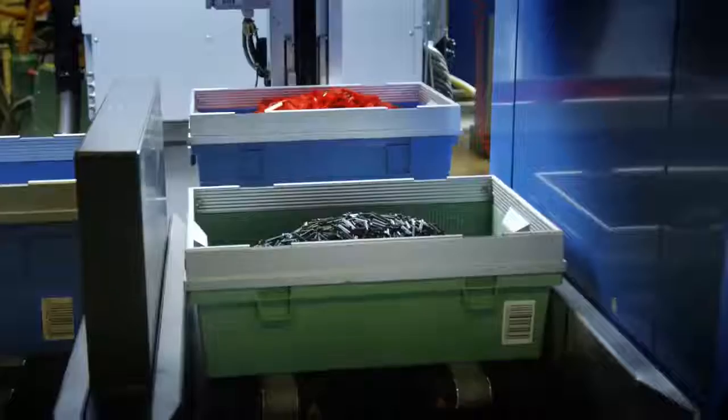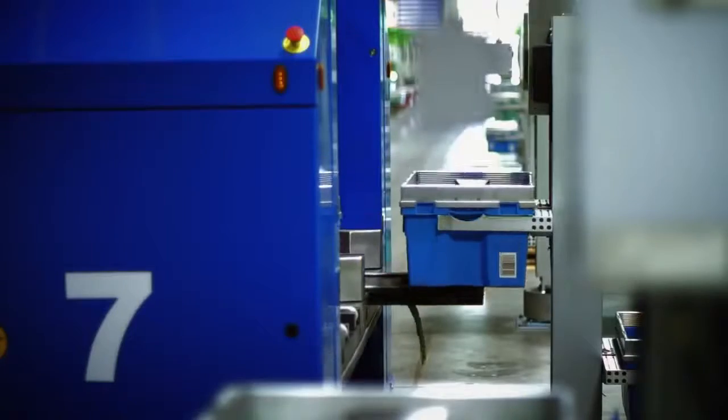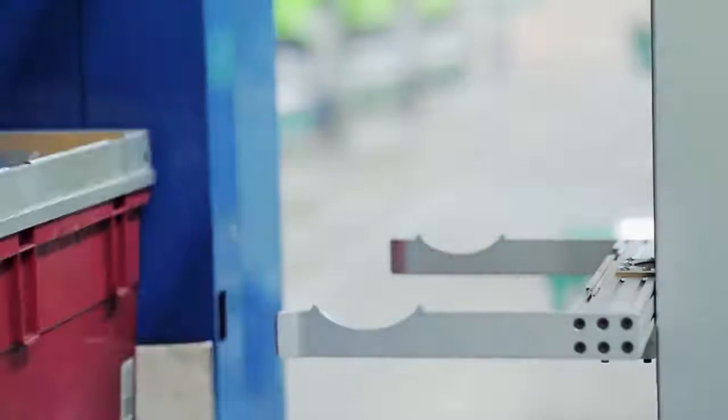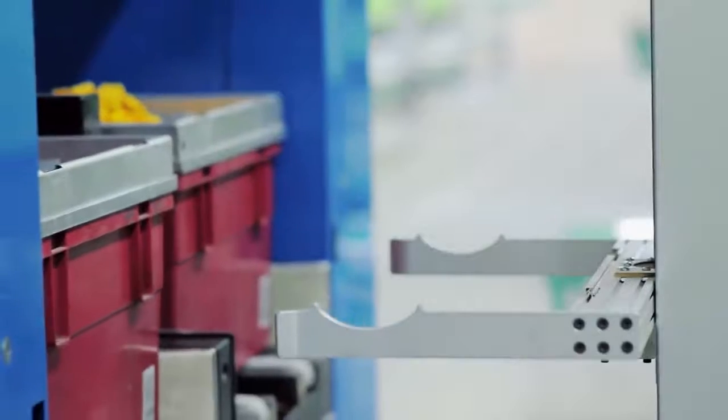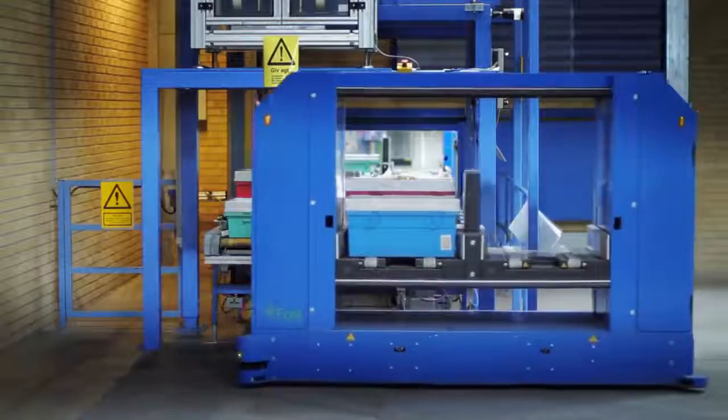AGV stands for Automatic Guided Vehicle. Robots like these were introduced into the production as early as 1987. When the box by the molding machine is full, these intelligent helpers replace it with a new empty box. The AGV then takes the full boxes to the conveyor system.